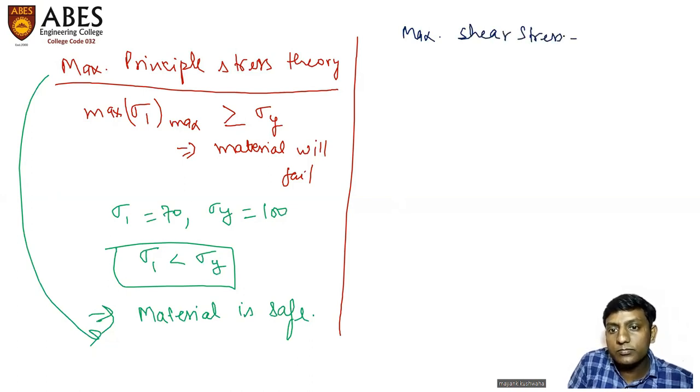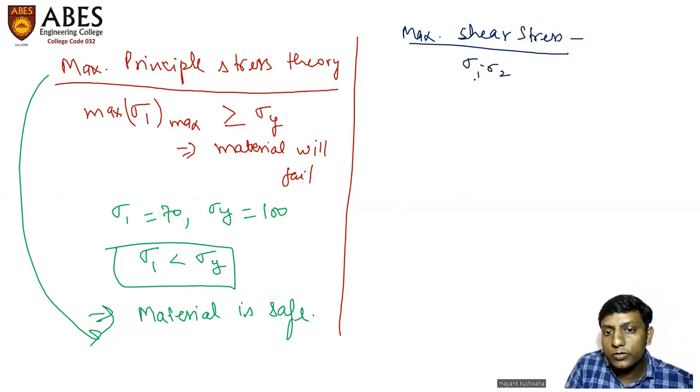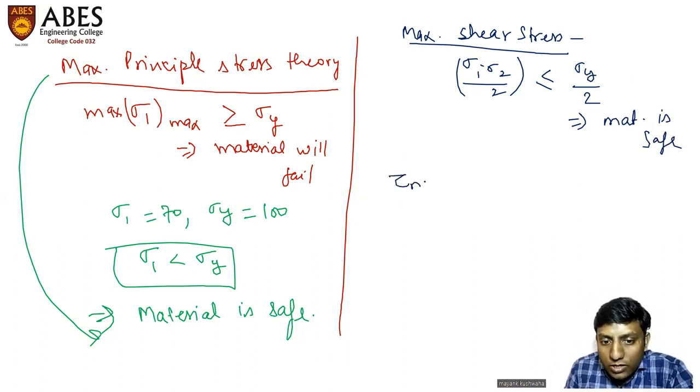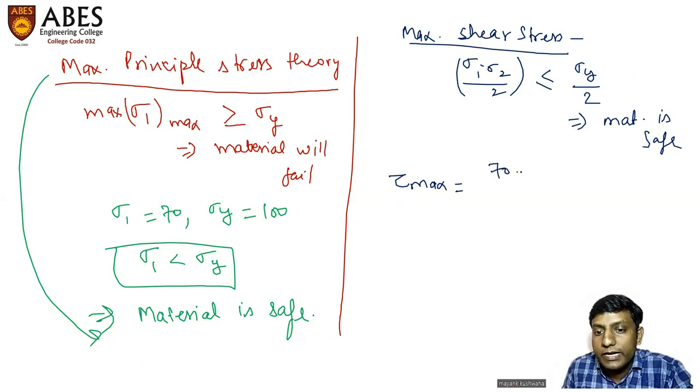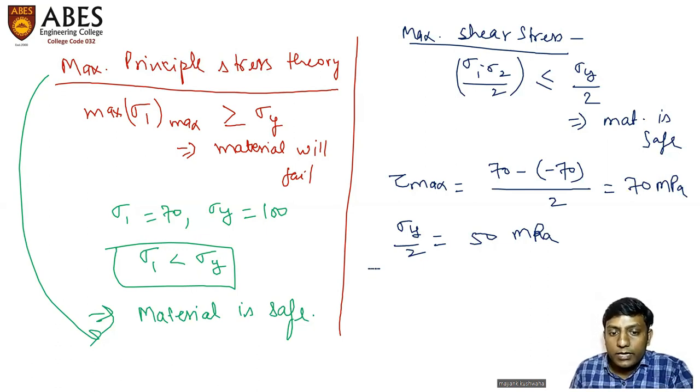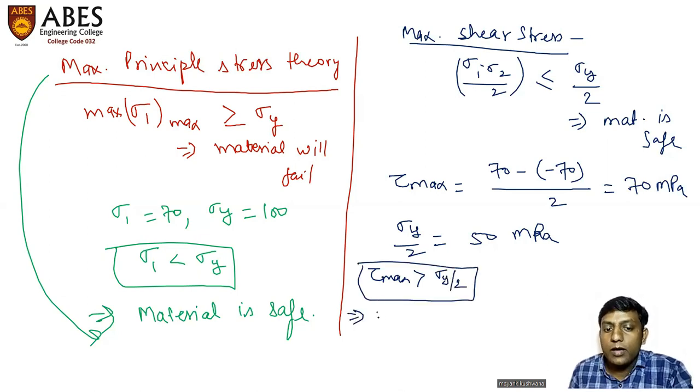Maximum shear stress theory says that sigma one minus sigma two by two should be less than or equal to this. This is the condition of safe. So let us see what is happening here. What is tau max? Tau max would be 70 minus minus 70 divided by two, which equals 70 megapascal. So what will be sigma y by two? That would be 50 megapascal.